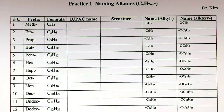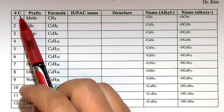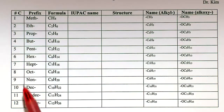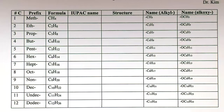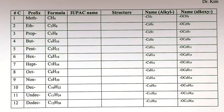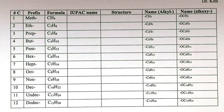All of these, number 1 to number 12, represent the number of carbons. These are the Greek prefixes and we should memorize them. Instead of a number, we'll use this prefix to count the number of carbons.